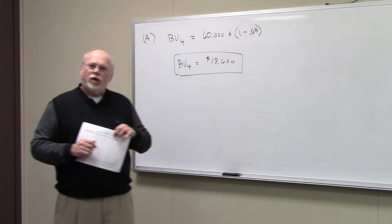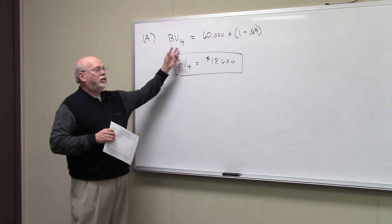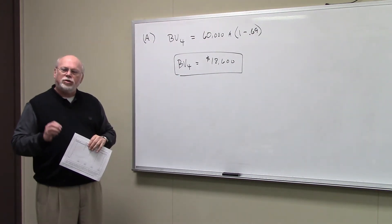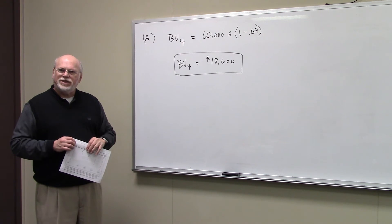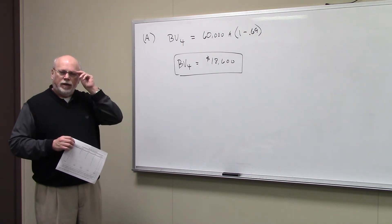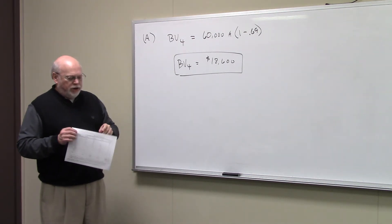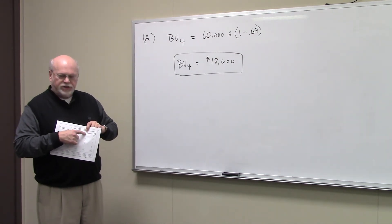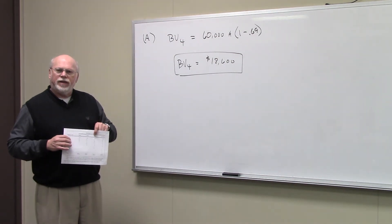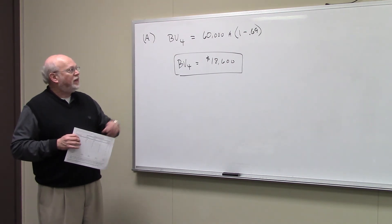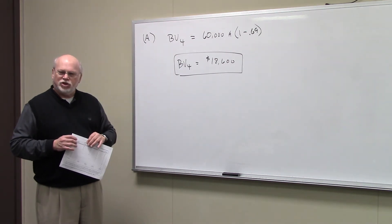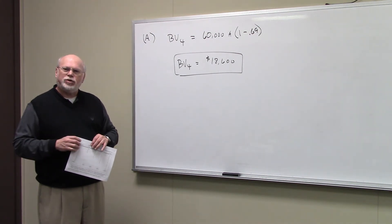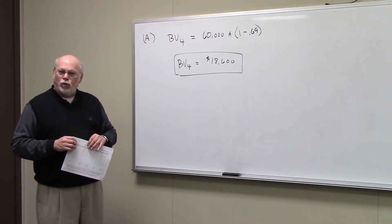But in this particular problem now, we're looking for the book value after four years of an asset whose original depreciable value was $60,000. Now, if you go to your MACRS table, and you sum up the first four digits underneath in that column, you'll find that it all sums to be 69%, 0.69. That means you've already written off 69% of the asset after four years.